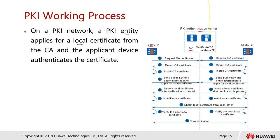On the PKI network, a PKI entity applies for a local certificate from the CA. The applicant device requests an authenticator certificate. So first, with two firewalls, they will request the CA certificate — this request is basically just to download the CA cert to find out who the CA is.